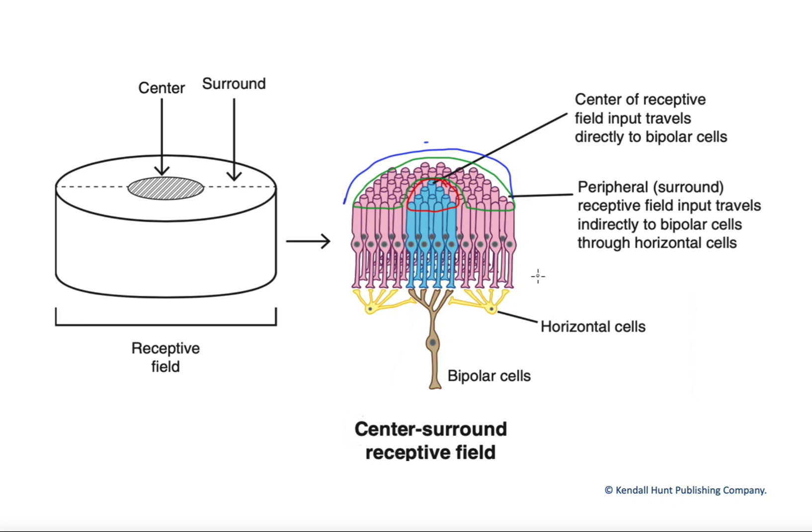is the potential for a difference between how the center cells activate the bipolar cell and how the peripheral cells would activate the bipolar cell.